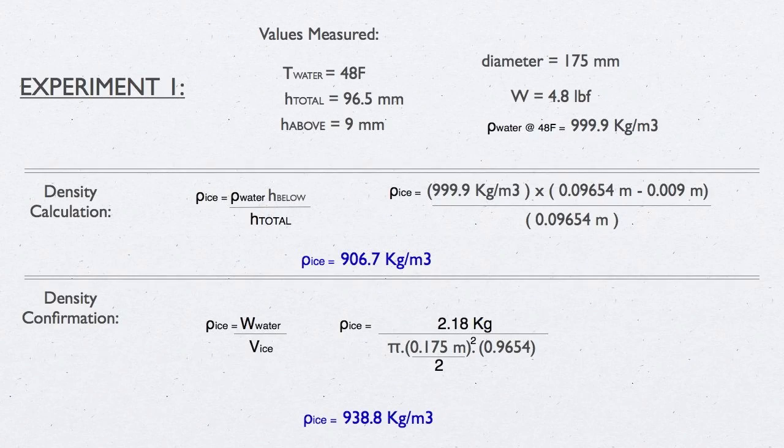We measured the temperature to be 48 degrees Fahrenheit. The density of water at this temperature is 999.9 kilograms per meter cubed, which can be found from density tables.